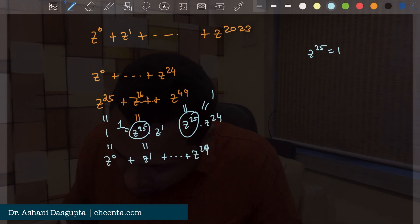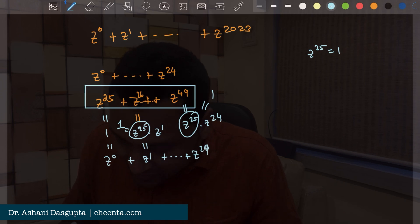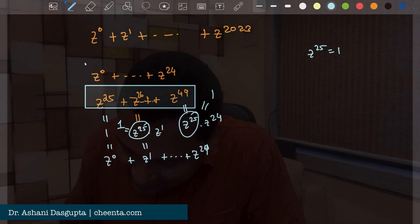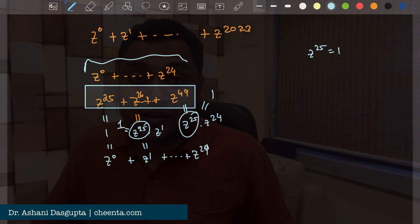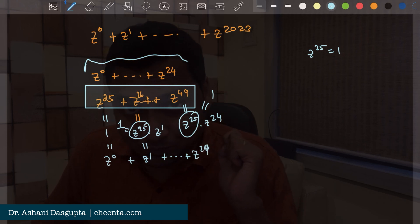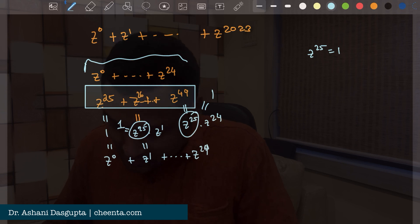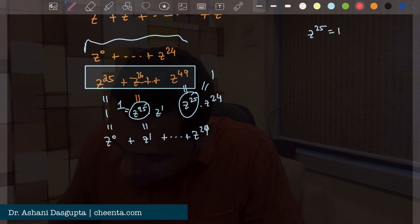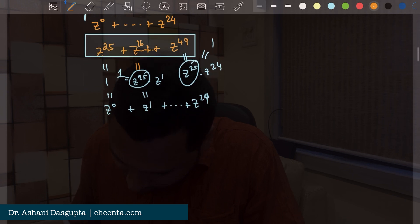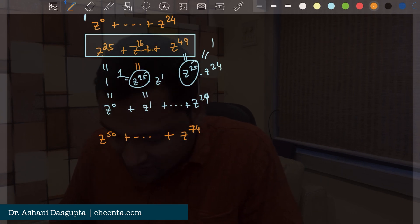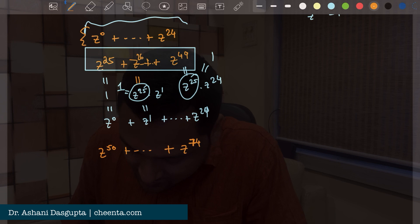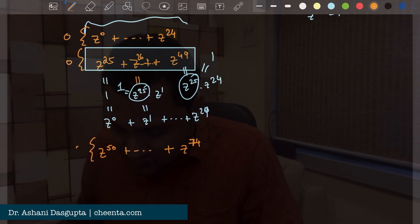You see what I'm doing? That this block from z to the power 25 to z to the power 49 is basically the same as z to the power 0 to z to the power 24. Because you can extract a z to the power 25 from each of them and make it 1. So then we have z to the power 50 to z to the power 74. That's again 0. So each of these pieces are 0.